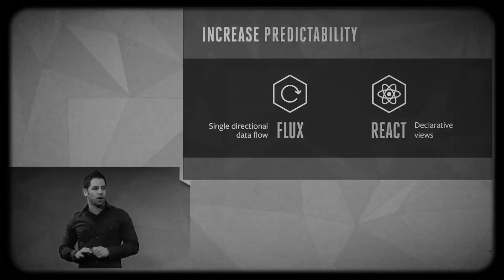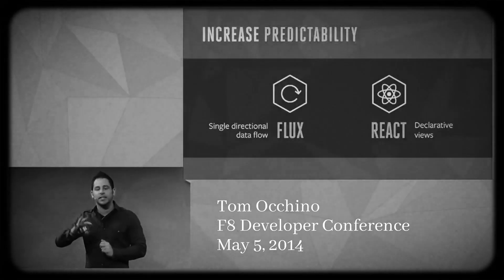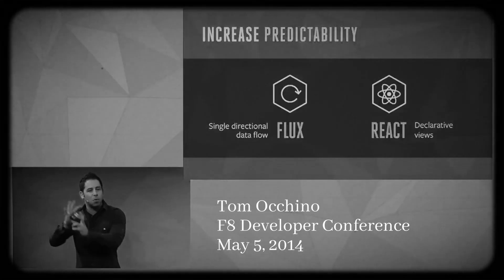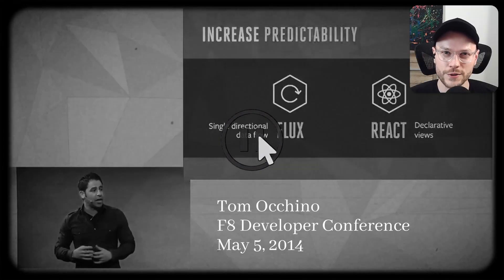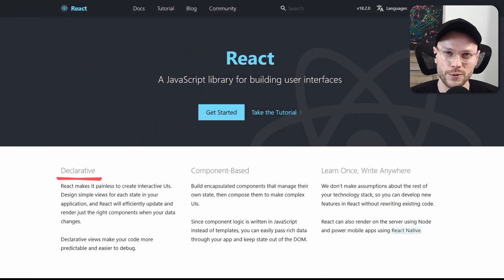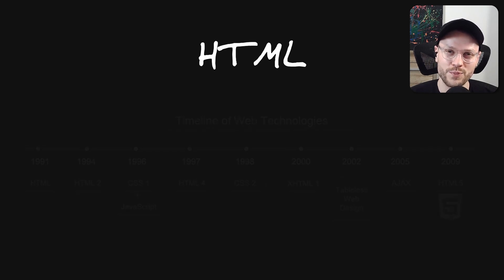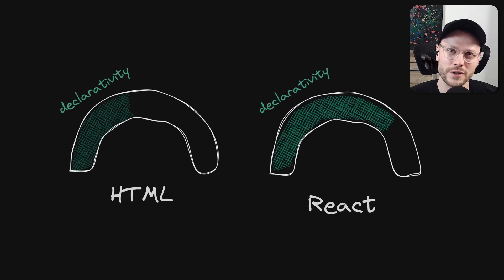React is a framework that allows you to build user interfaces in a way that is a lot more predictable, a lot more declarative. When React came out, it was marketed as declarative views, and for a long time it was one of the main selling points on the official website. But you know what else is declarative? HTML. And we've been building UIs with it since the very beginning of the web. So how is React more declarative?